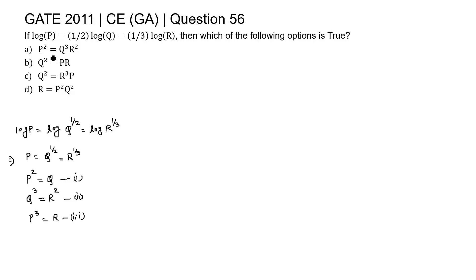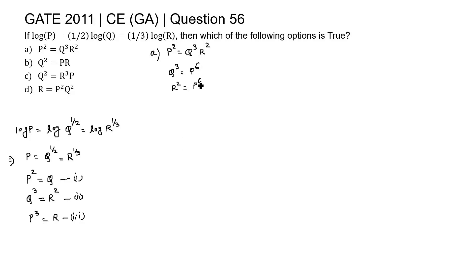Now if we check the options: Option A states P² = Q³ · R². Expressing in terms of P: Q³ = P^6 and R² = P^6. So Q³ · R² = P^12, but the option states P². This relation is not correct.